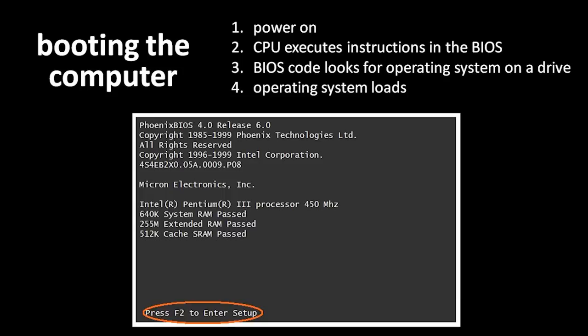What this code in the BIOS then has the CPU do is look for an operating system on one of the storage drives in the system, most likely a hard drive. When an operating system is found, it is then loaded into memory, and the CPU starts executing that operating system code.